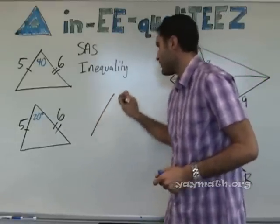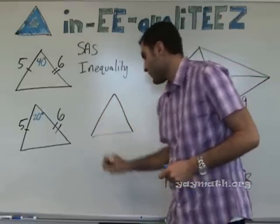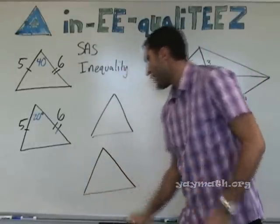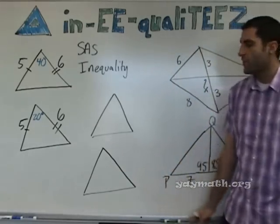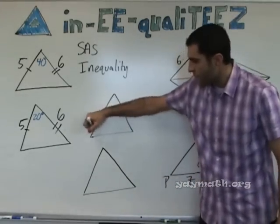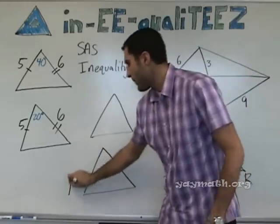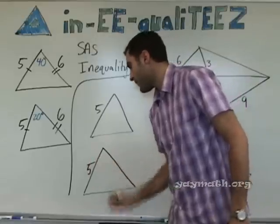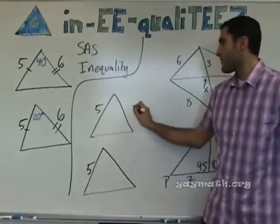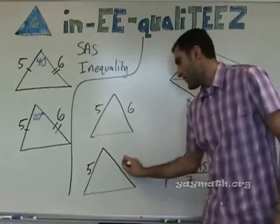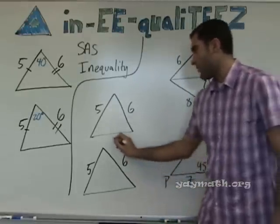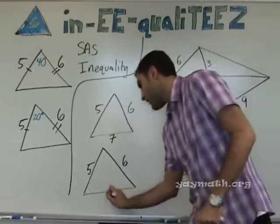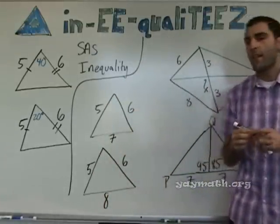And now let's do another one. Here's one triangle and here's another one, slightly larger. Let's put in five and five, and six and six. And now let's do seven and eight.